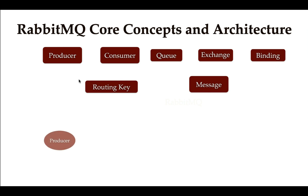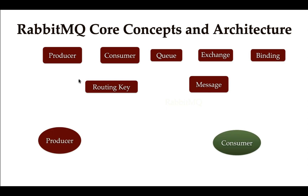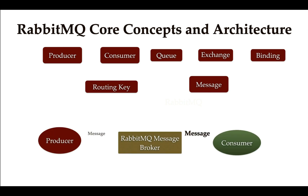In the RabbitMQ architecture, we have multiple components. We have a producer that sends a message to the RabbitMQ broker, and then we have a consumer that consumes that message from the RabbitMQ broker. We'll start by understanding all these core concepts and the architecture.